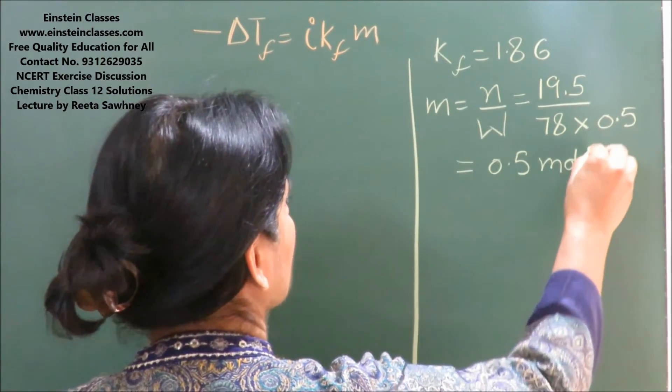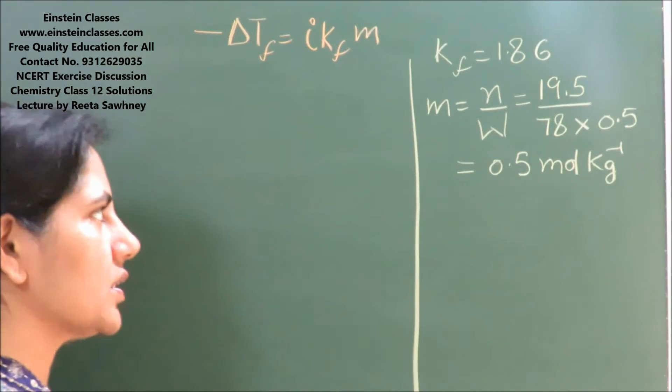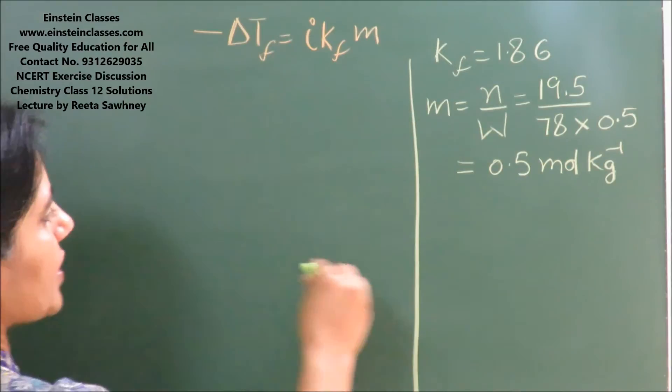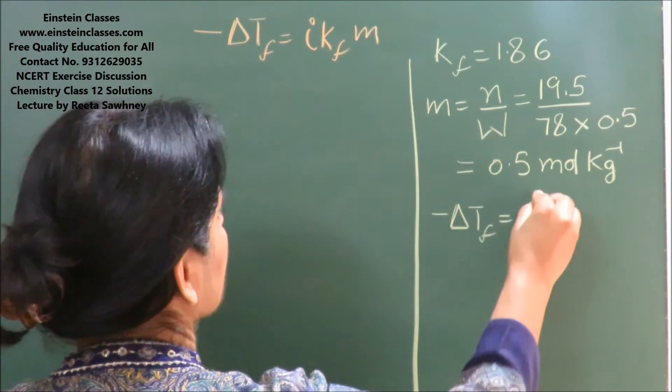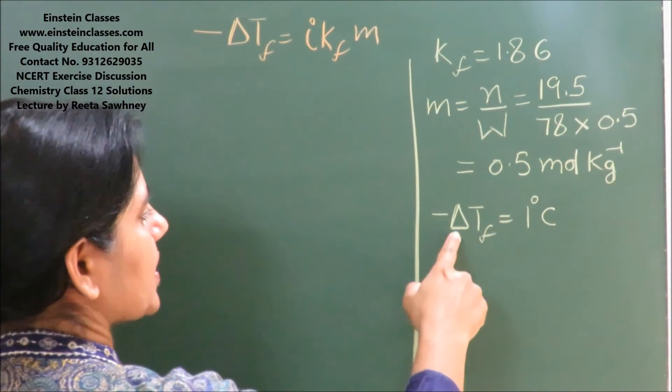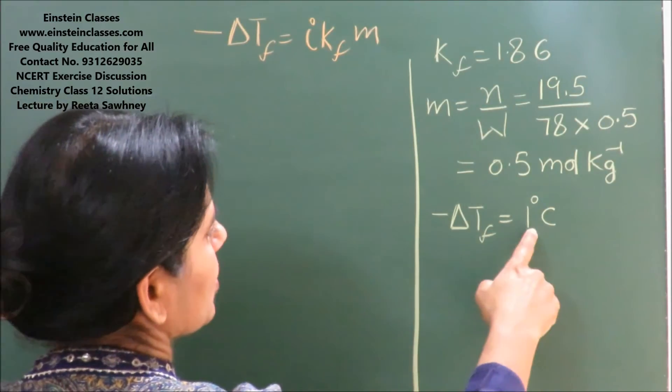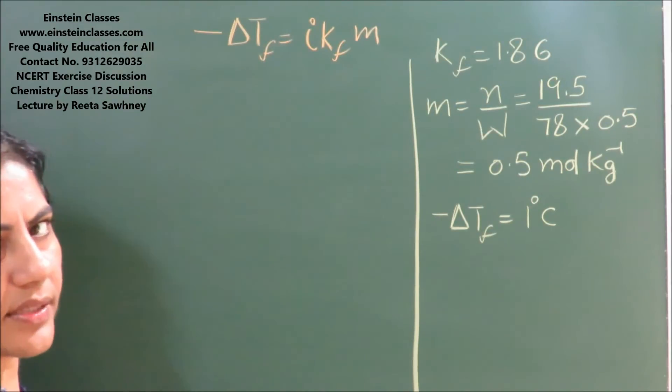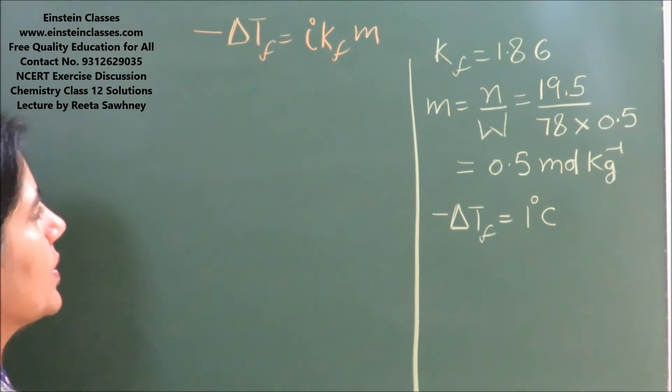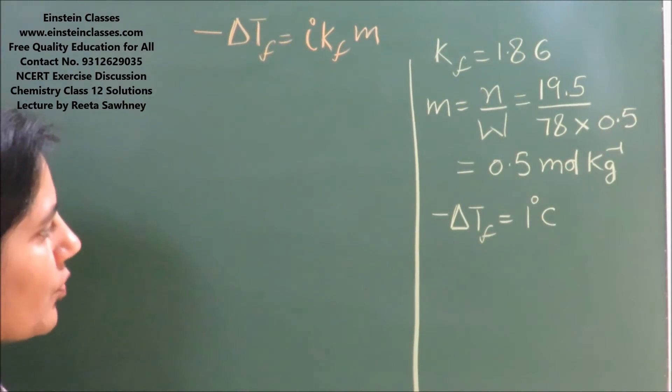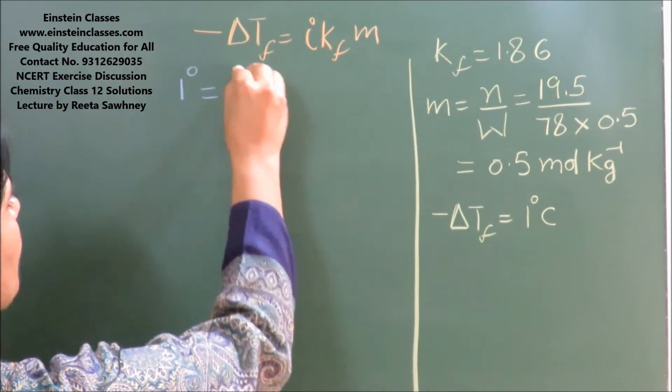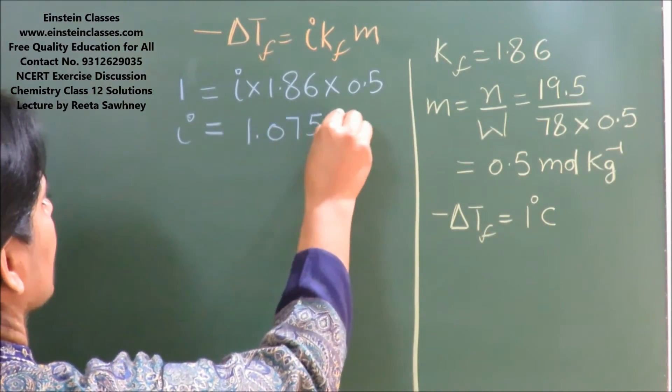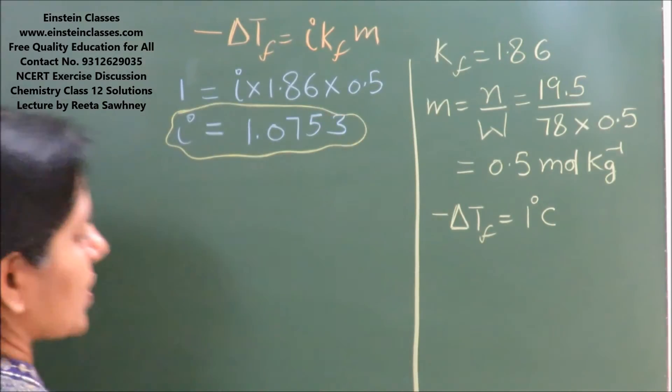So we have molality, we have Kf, and depression in freezing point is 1 degree C. Depression in freezing point is the difference in temperature, so we can take either in the units of centigrade or in the units of Kelvin. Either way, the value will come out to be the same. So we can find out the van't Hoff factor i. i is 1.0753. So we have calculated the van't Hoff factor i.